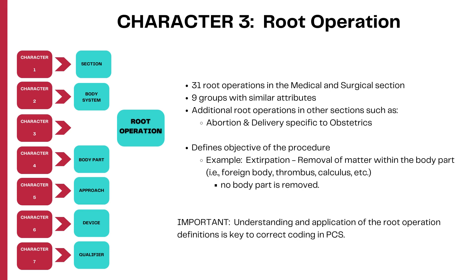The third character is the root operation, and this is the most important character in the PCS code. If you understand how to read and apply the definition of a PCS root operation, you will get all the codes accurately. There are a total of 31 root operations in the medical and surgical section alone. For example, excision and resection are two similar root operations — excision is removal of a body part partially, and resection is removal of a body part completely.